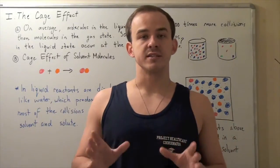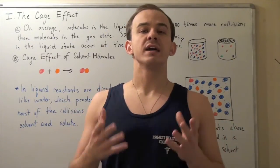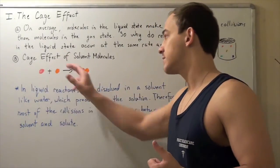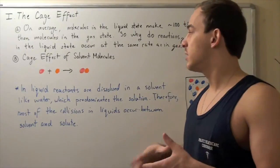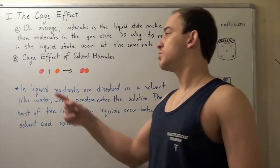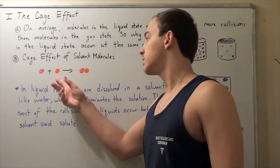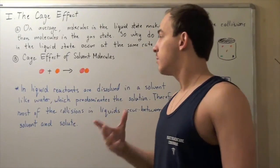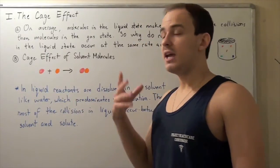Now this is not actually the case, and this is because of an effect called the cage effect of solvent molecules. Let's look at the following reaction. Suppose a red molecule must react with an orange molecule to produce a red-orange product.